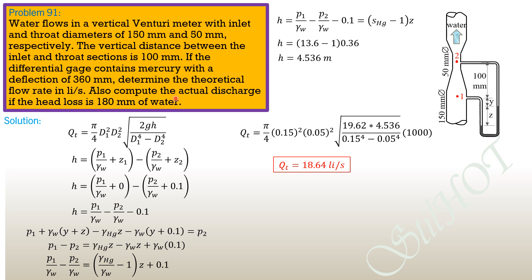For the actual discharge, the same formula is used but h is replaced by (h − head loss), since the head loss appears on the same side of the energy equation. So Q_actual uses h_effective = 4.536 − 0.18.